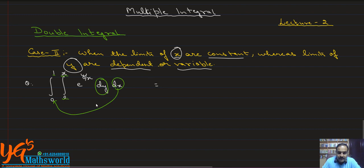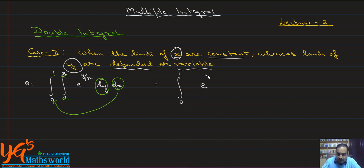Integrating this part with respect to y, keeping x as a constant: we have 0 to 1 as it is, and we integrate e raised to power y over x with respect to y. The coefficient of y is 1 over x, so dividing by 1 over x, within the limit 0 to x, dx.